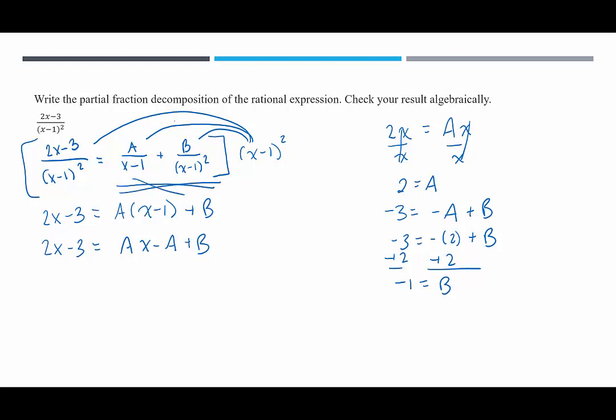So A is 2 and B is negative 1. Let's go back to where we wrote them separately. We end up with A is 2, 2 over x minus 1, I want to say minus 1 over x minus 1 squared. And that should do it, but let's check our work first. I like being 100% on this. So let's check.